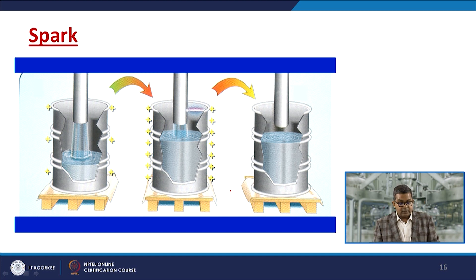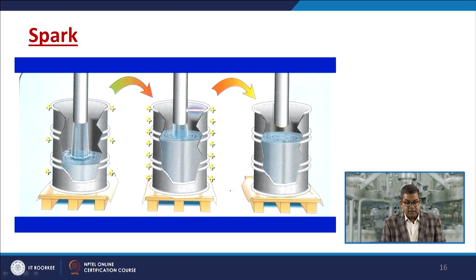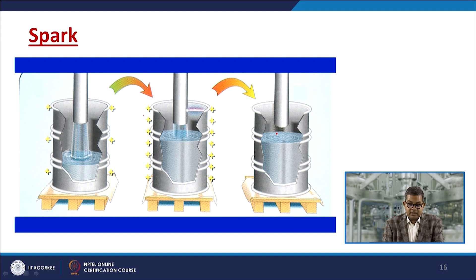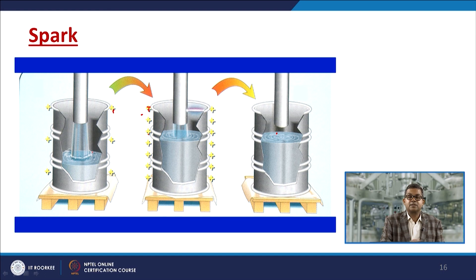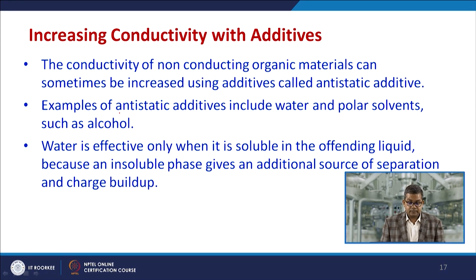Vessel filling operations present another source of spark or charge transfer. Three key aspects must be considered: charge generation within the vessel interior, charge generation at the outer periphery, and methods to reduce the impact of spark generation. This figure depicts how to minimize charge transfer and the effect of spark generation during vessel filling.